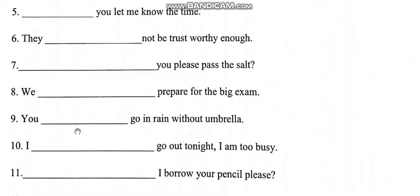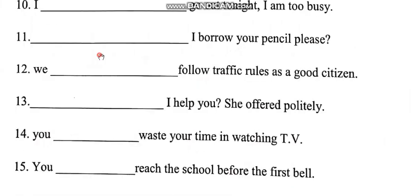Number nine: 'You ___ go in the rain without an umbrella.' Answer: You shouldn't go in the rain without an umbrella. Number ten: 'I ___ go out tonight, I'm too busy.' Answer: I can't go out tonight, I'm too busy.